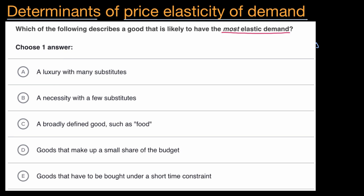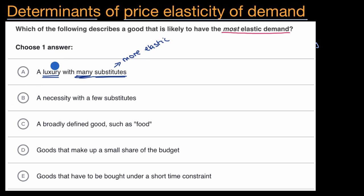The first choice talks about a luxury with many substitutes. When dealing with substitutes, if there are many substitutes, that makes quantity demanded very sensitive to price — so this would be more elastic. And the fact that it's a luxury, something people don't need, would also make quantity more sensitive to price, so also more elastic. This is looking like a good candidate, but let's check the other options.